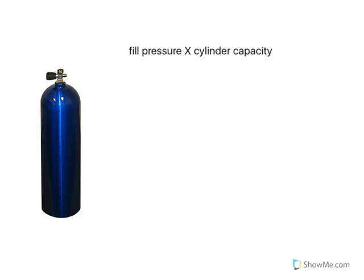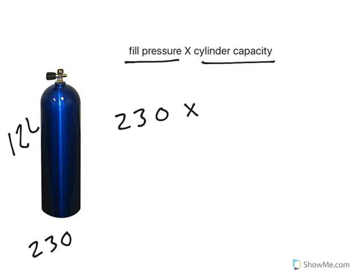So for the purpose of this exercise, we're using this 12-liter cylinder here, and it's filled to 230 bar. So to work out how much gas is in this exact cylinder, we need to multiply the fill pressure, which is 230 bar, by the cylinder capacity, and it's a 12-liter cylinder. And this gives us a total of 2,760 liters of gas inside that cylinder.